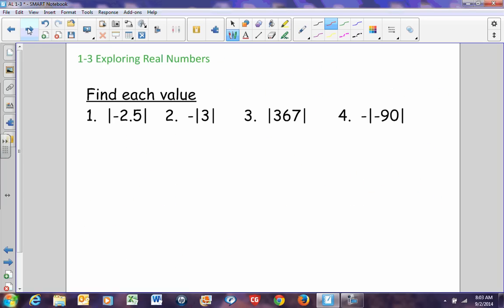Let's look at some absolute value problems here. The absolute value of negative 2.5, since absolute value must be positive, we're just going to say 2.5. Number 2 here says the opposite of the absolute value of 3. The absolute value of 3 is 3, the opposite of that is negative 3. The absolute value of 367 is 367. The absolute value of the opposite of negative 90 means we work from the inside out. The absolute value of negative 90 is positive 90, but the opposite of that, remember that a negative sign can also mean opposite of, is negative 90. Absolute value is fairly simple to do.